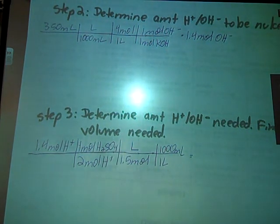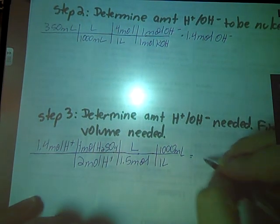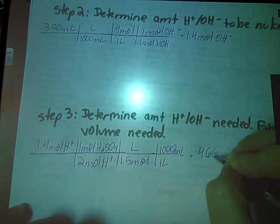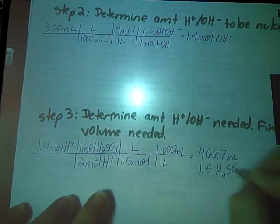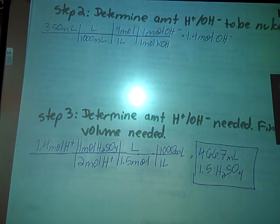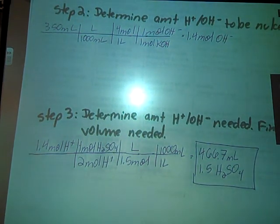Multiply all the way across the top, divided by all the way across the bottom. Tells us we need 466.7 milliliters of that 1.5 molar sulfuric acid solution. So that's two pretty straightforward examples for you. I'll be doing a couple more later that are more titration-y, like lab-looking problems, and some different ones trying to solve for pH of solution as well. I hope this made some sense as far as your first introduction goes. If you have any questions, leave them in the comment box, and I'll get back to you as soon as I can. Take care.